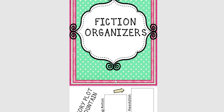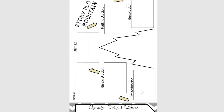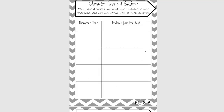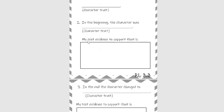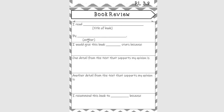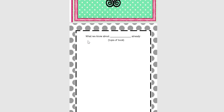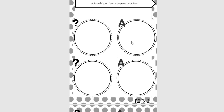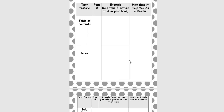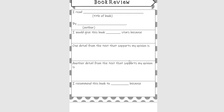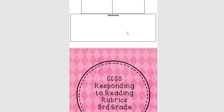The fiction organizers include a story plot mountain, character trait evidence, stick figure character change, summarizing, compare and contrast, and a book review. For nonfiction, there's a KWL — what we know, what we want to know, what we learned — as well as a question-and-answer quiz or interview, a nonfiction scavenger hunt, main idea and details, book review, and vocabulary. Students can work on these as a group or independently and then come back to discuss. There are also synthesizing, timelines, and compare and contrast organizers.